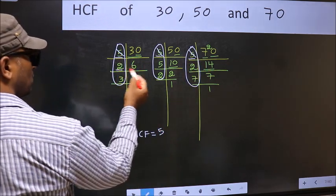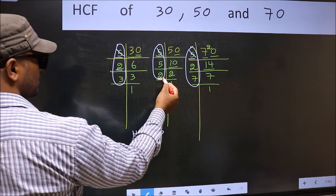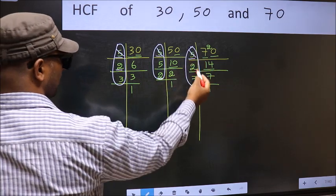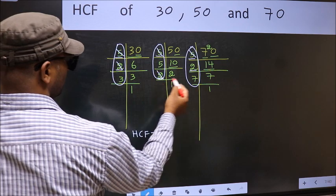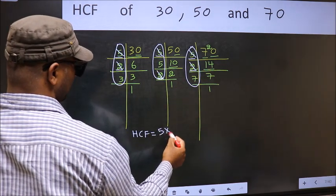Next number 2. Do we have 2 here? Yes. Go to the next place. Do we have 2 here? Yes. So cut 2 right here.